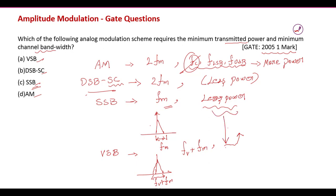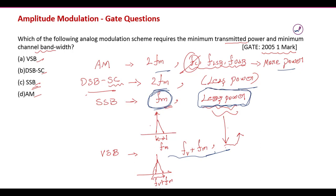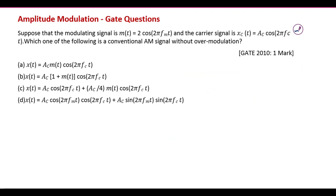Comparing all schemes, single sideband has the smallest bandwidth and consumes the least power. Therefore, the answer is SSB — it requires minimum transmitter power and minimum channel bandwidth.